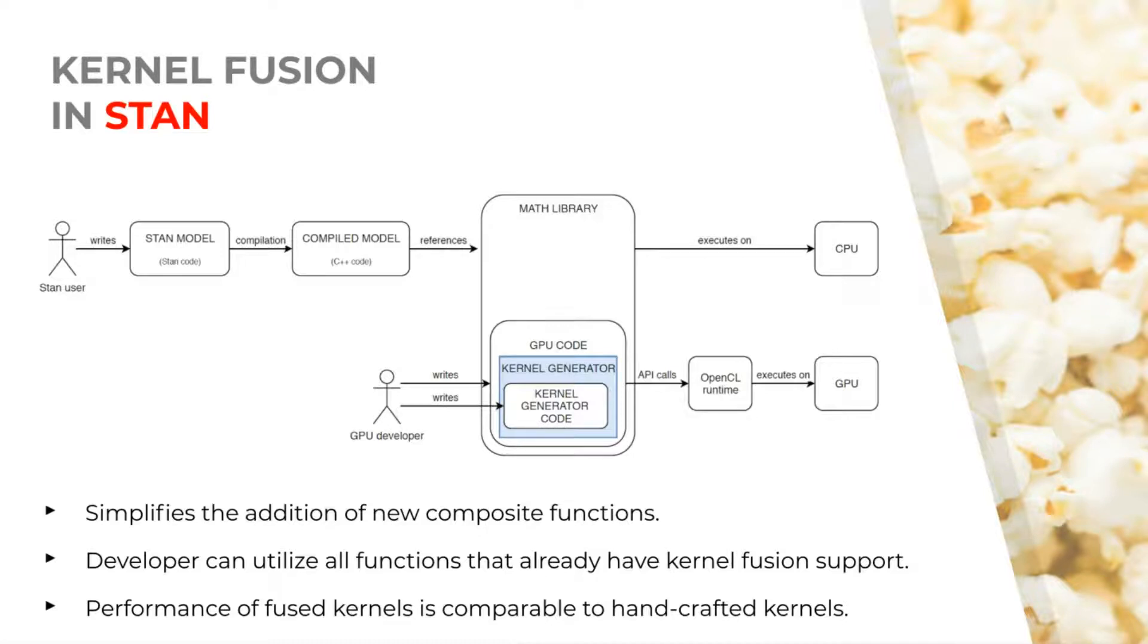Three of the GLM likelihoods that we'll discuss in the next slide also use fused kernels. These three GLM specializations previously used handcrafted kernels. Replacing these handcrafted kernels with the kernel fusion techniques significantly simplified the code. For example, in the linear regression kernel, we replaced 180 lines of source code with 20 lines, and it didn't affect performance at all.